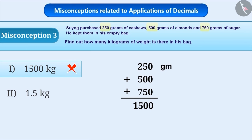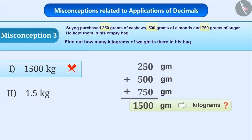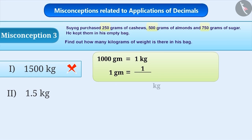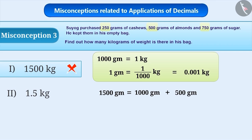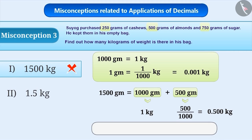In this question, it is asked to find the sum of 250 grams, 500 grams and 750 grams, and the result is asked to be expressed in kilograms. The sum of these numbers is 1500 grams. You must know that 1000 grams equals 1 kilogram. So, 1 gram is equal to 1 by 1000 kilograms, which means 1 gram is equal to 0.001 kilograms. Now, 1500 grams equals 1000 grams plus 500 grams. 1000 grams equals 1 kilogram, and 500 grams equals 500 by 1000 equals 0.5 kilograms. Therefore, 1500 grams equals 1.5 kilograms. The correct answer is option 2.